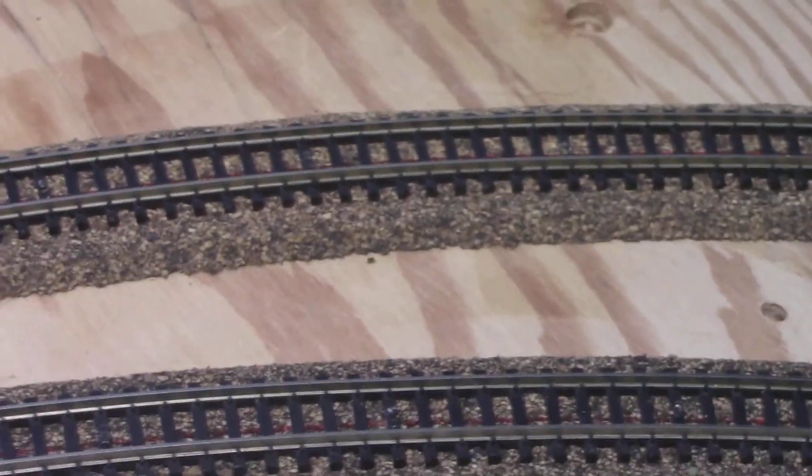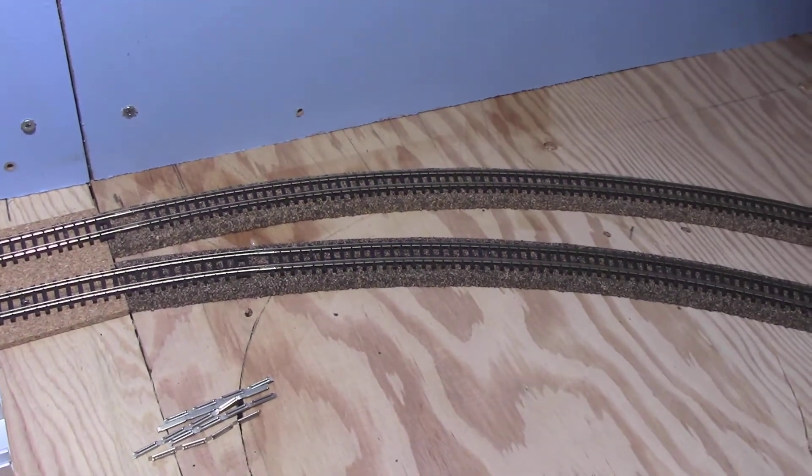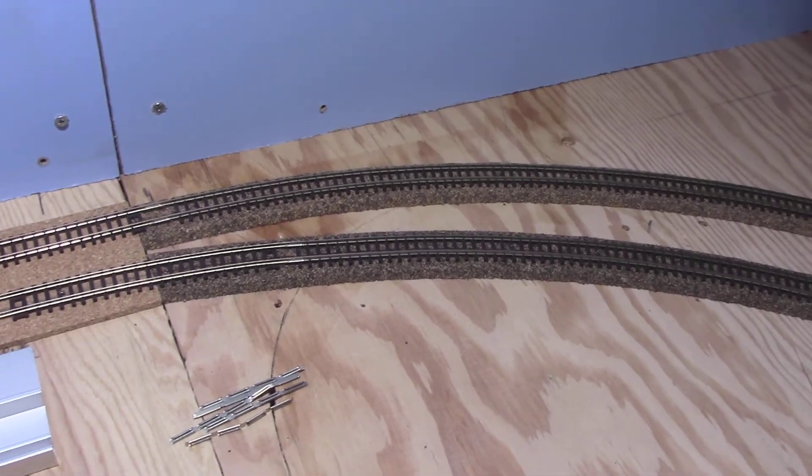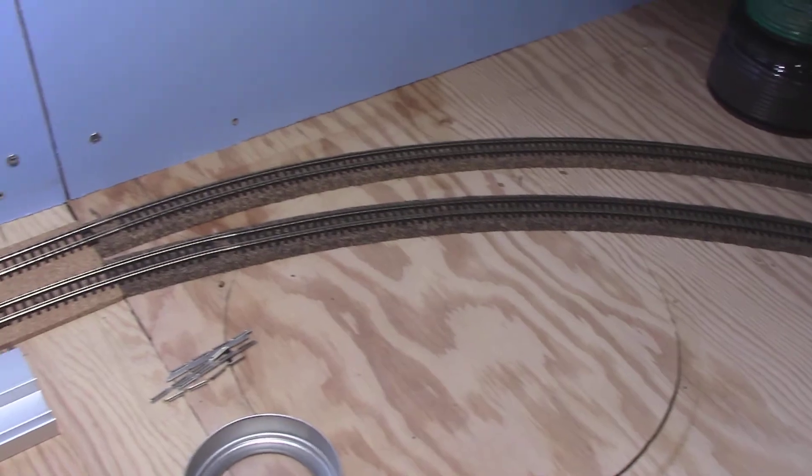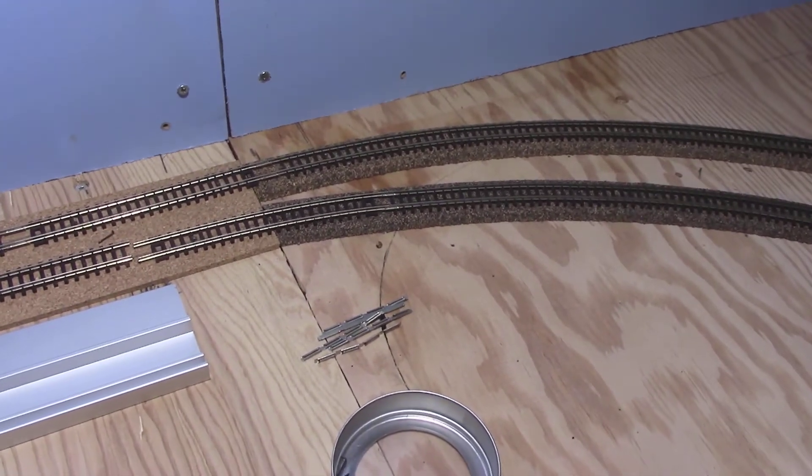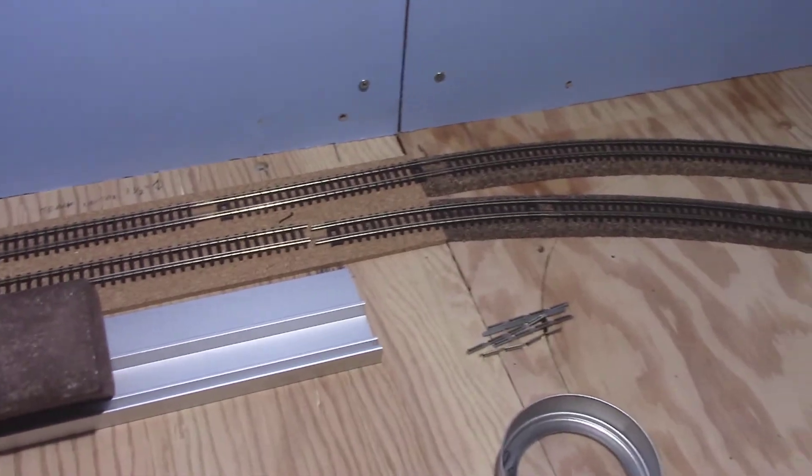That they just line up and they kind of hide themselves that way. Now I don't know how it'll look once it's ballasted, but if it really bothers me I can yank all the spikes out of the ties after it's ballasted if it really bothers me. But for now I'd rather have it secured down to the plywood than glue and it's a heck of a lot faster.